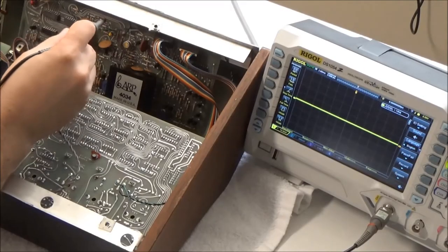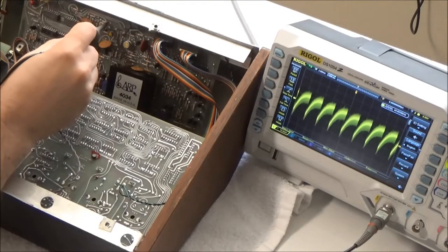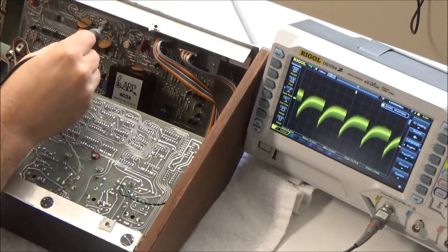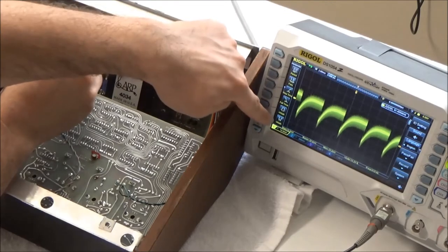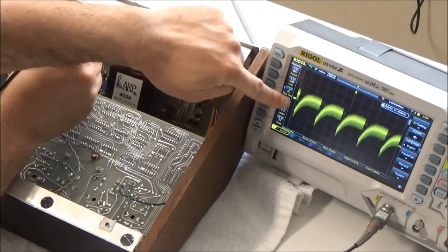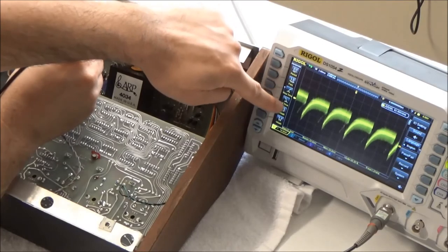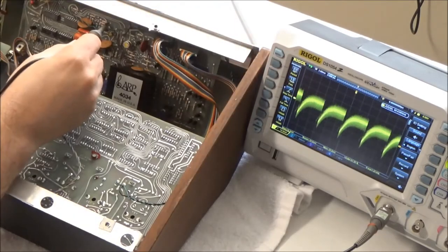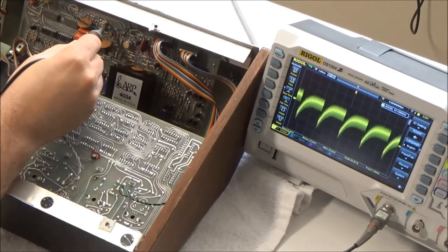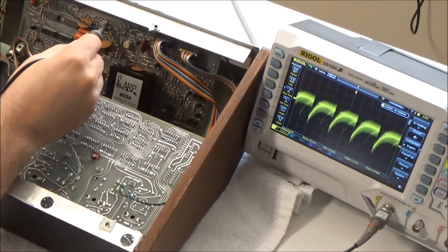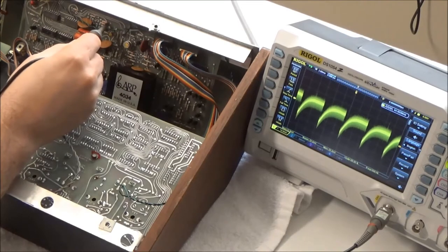Right now we're on Fuzz Guitar 1, which is working. This is what the input to the VCF looks like. I'm at 10 millivolts per division, so we have a very low amplitude signal here. It looks like about 20 millivolts peak-to-peak. This is the input to our VCF.